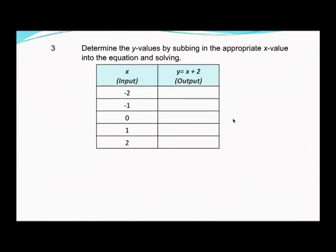We're going to now determine the y-values by substituting the appropriate x-value. For the first one, we're going to use the input of -2. So our output is going to be equal to -2 + 2, and so our y-value is 0. We put that into our table of values, so our first point is (-2, 0).